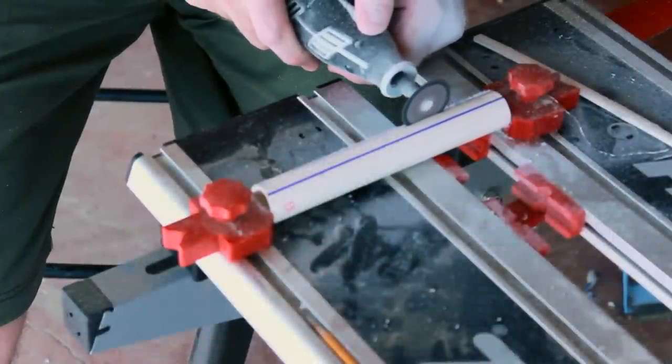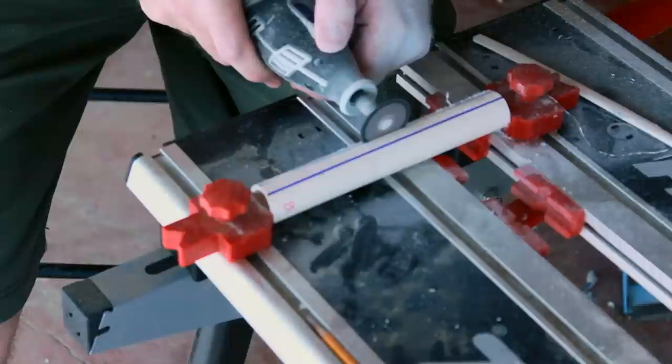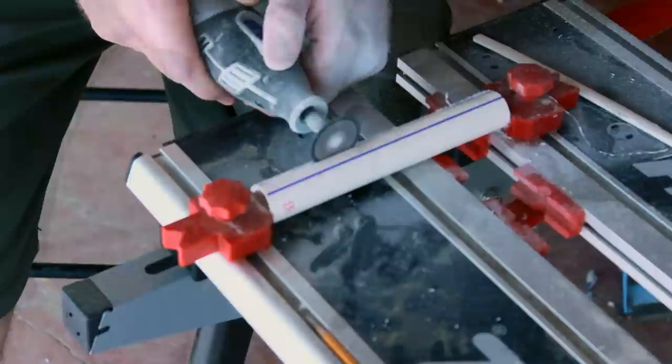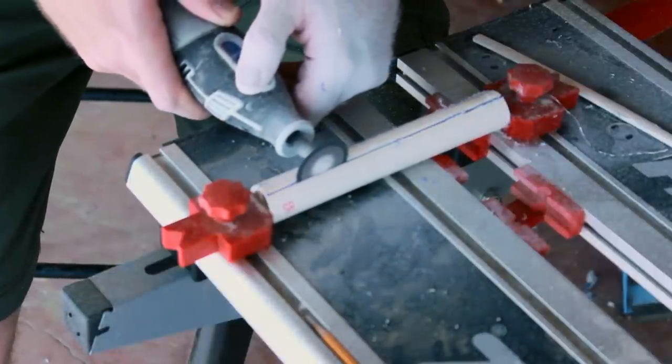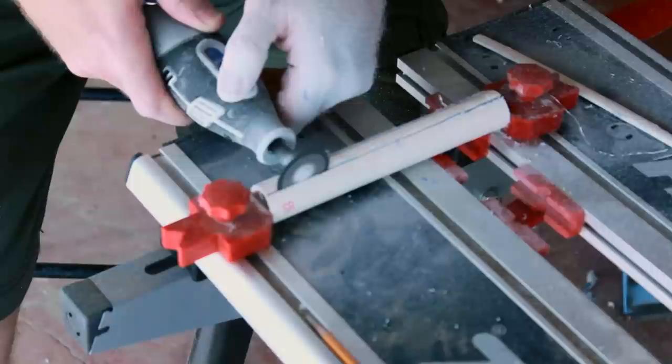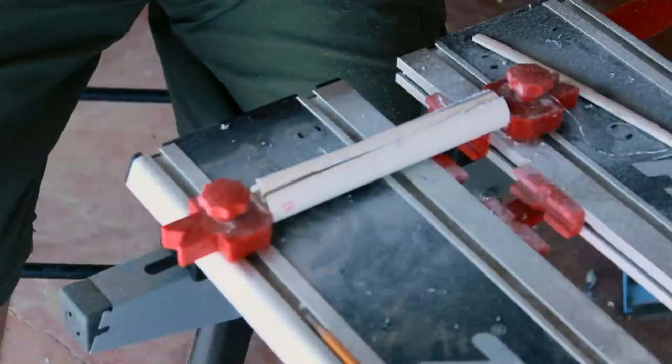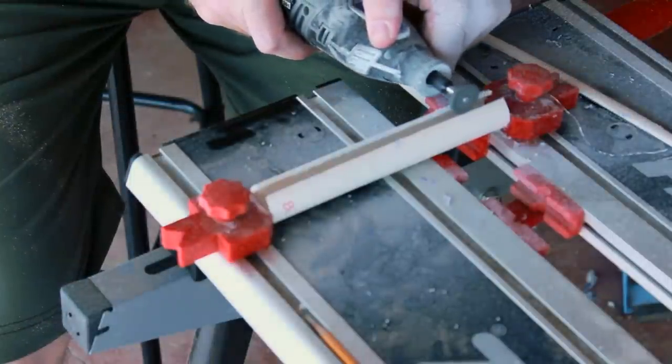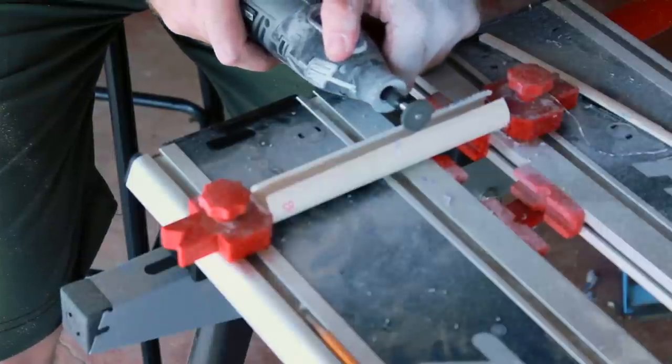Now comes the part where it pays to have the right tool for the right job. This is not the right tool. Better to have a table saw with a dado blade, but the object is to cut channels along the pieces that will hold the iPad, and cut them smooth and cut them straight. Since this is where your iPad is going to rest, these are the ones you really need to sand.